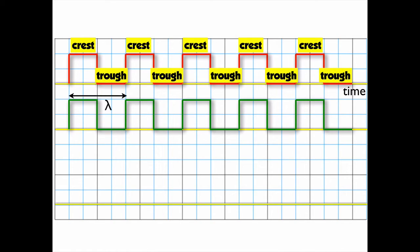It also has a wavelength, just like a sine wave, just from the start of the crest to the start of the next crest. Or you could do the start of the trough to the start of the next trough, same way you would with sine waves.